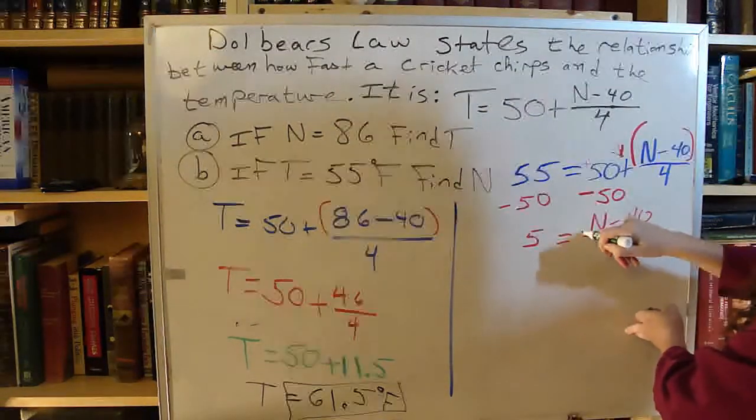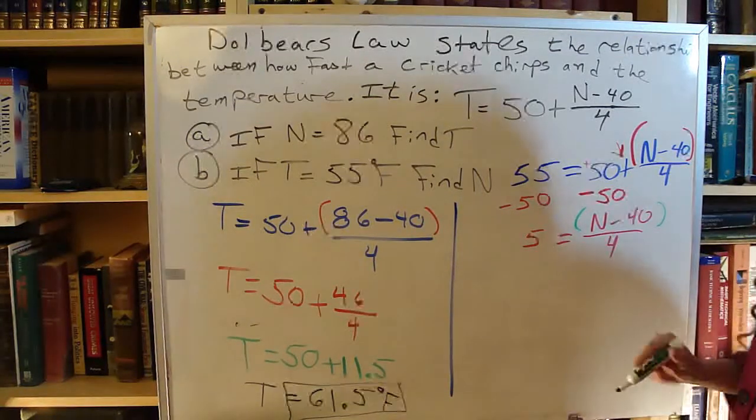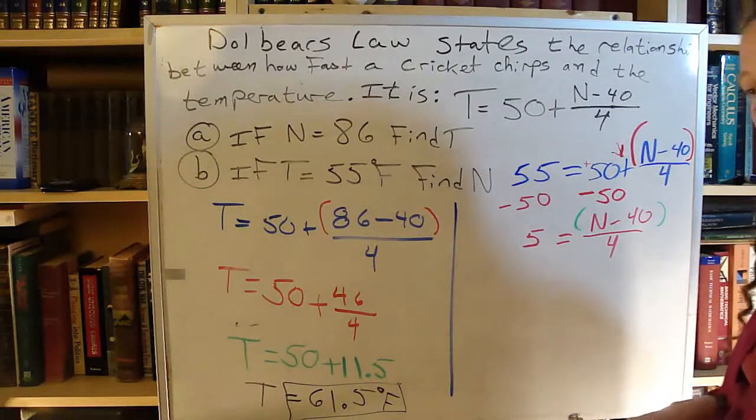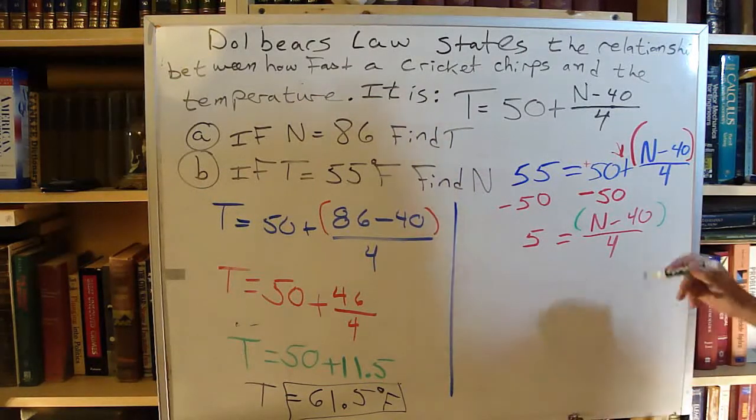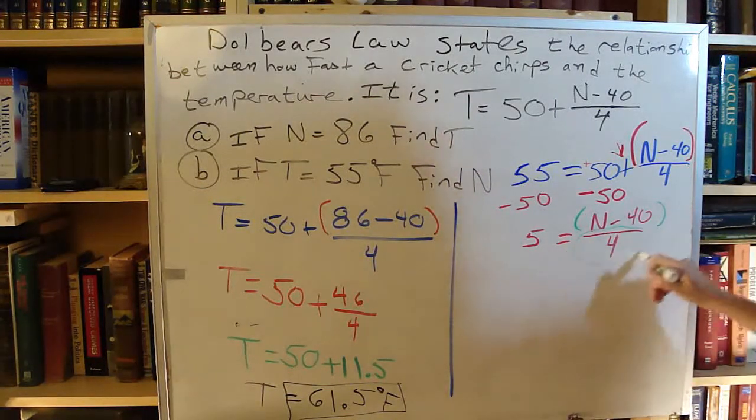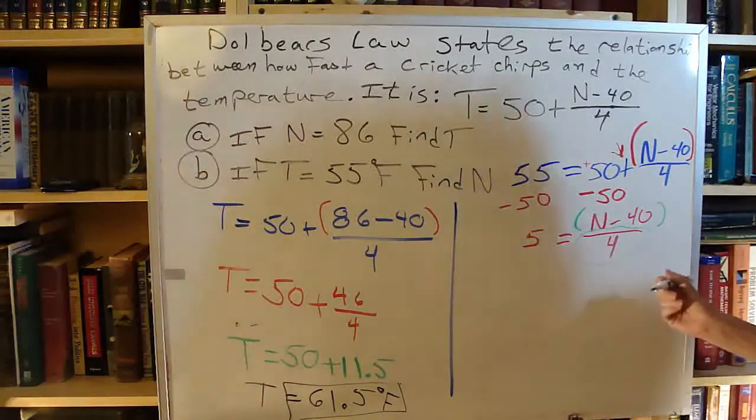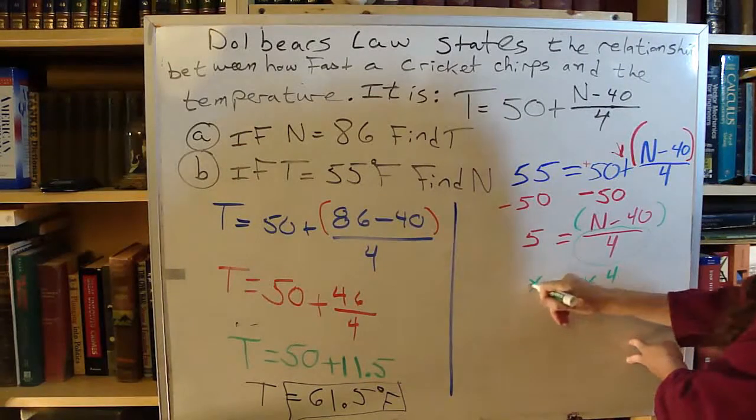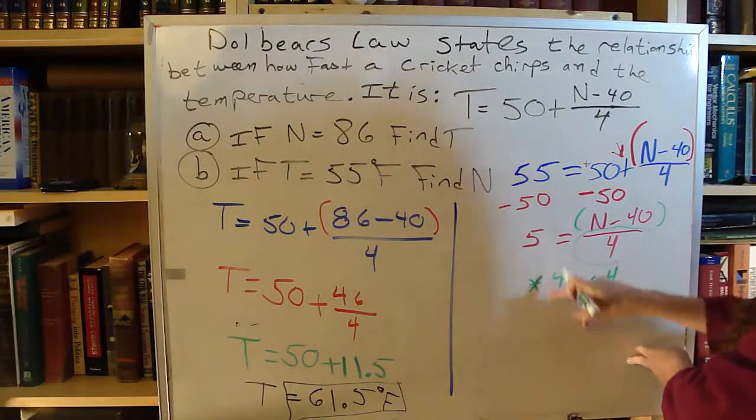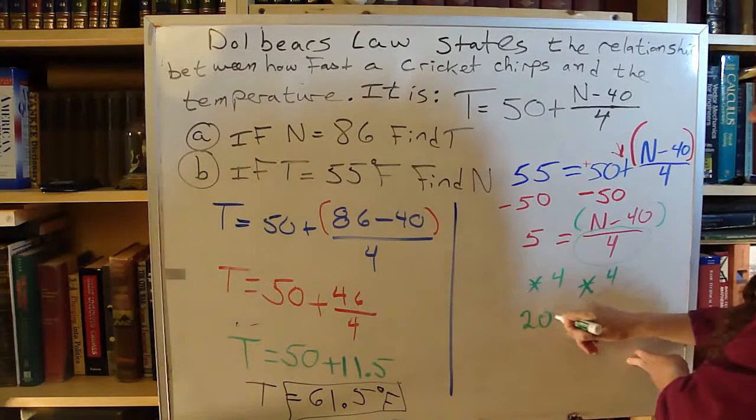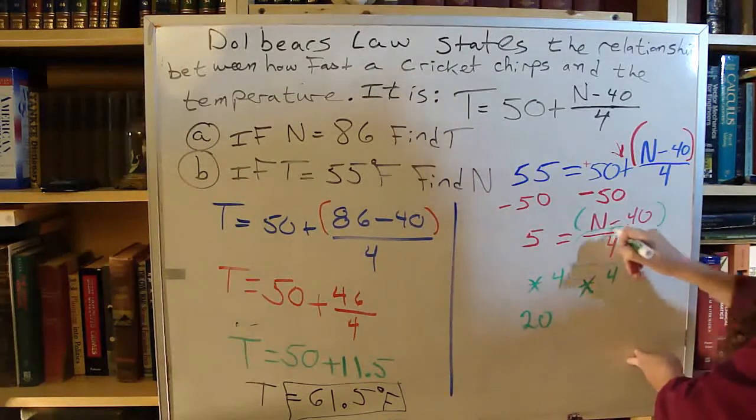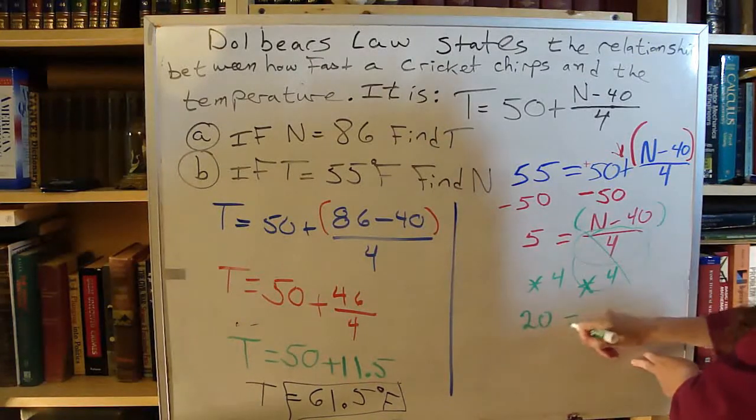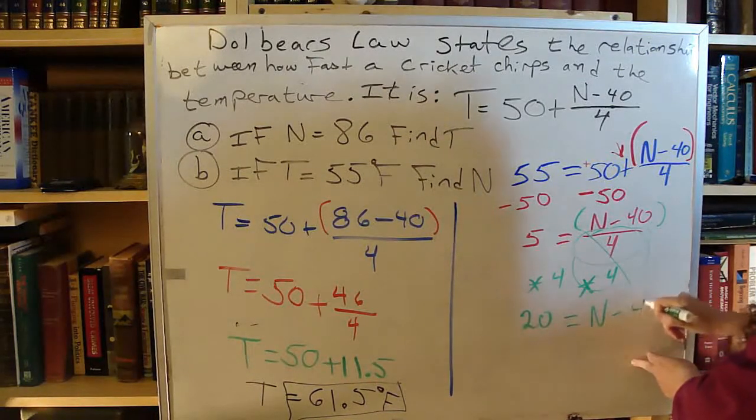I still have my understood parenthesis. So now I have my add, subtract is done. I go to my multiply, divide. Still going backwards. So I have to get rid of that divide by 4 there. You get rid of something that's divided by multiplying it. So 5 times 4 is 20. The divide by 4 and the times 4 cancel each other out. And I have equals N minus 40.